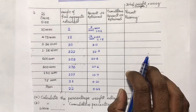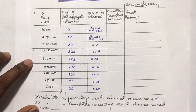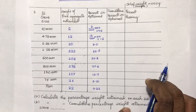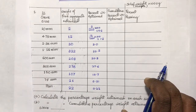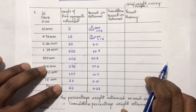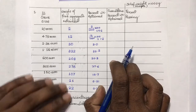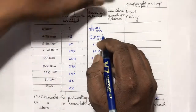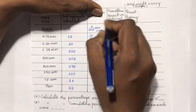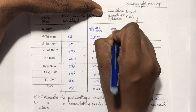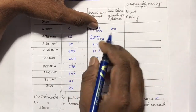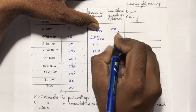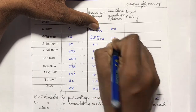Now coming to the second problem: we have to calculate the cumulative percentage weight retained on each sieve. The cumulative weight percentage retained is calculated by adding the percentage weight on the preceding sieve to the succeeding sieve. For the first sieve there is no preceding sieve, so it remains 0.2. For the second sieve: 0.2 plus 1.2 equals 1.4.